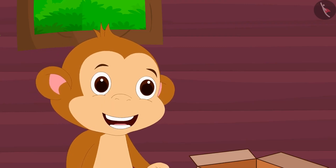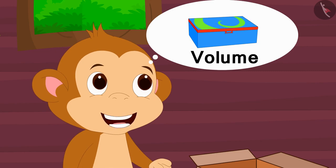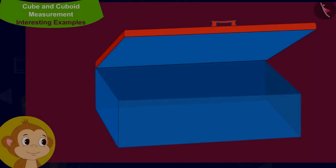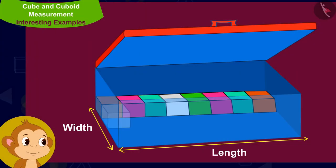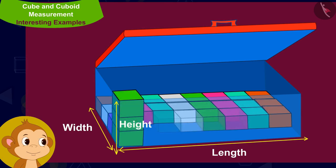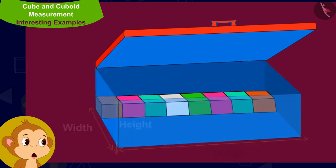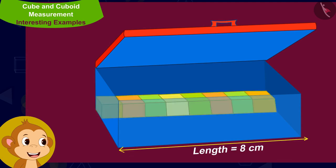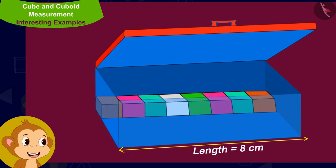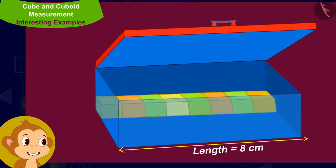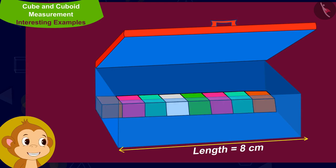He decided to use these cubes to find the volume of a compass box. He measures the length, width and height of the compass box. The compass box is 8 centimeters long — meaning the length of this compass box is equal to 8 cubes of dimension 1 centimeter each.